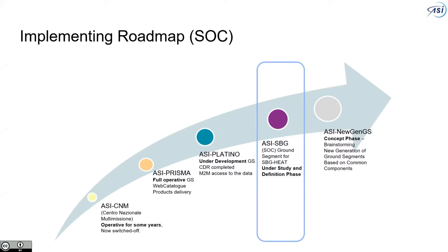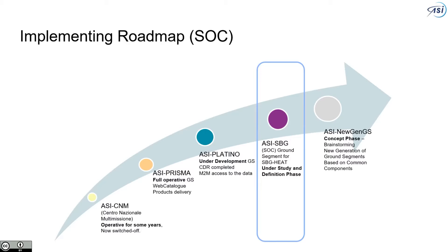Regarding the implementation roadmap, the scientific operation center is an under-development ground segment, but it comes from a history of ground segments that are time by time updated and improved. Our vision is to work to generalize the new generation ground segment, constituted of different blocks that can be combined to realize the final ground segment. Regarding the architecture of the scientific operation center, on the left we have open source technologies that we plan to use, and also some interfaces that we plan to use in order to distribute data to the user. The ground segment has a precursor already in operation — for example, for the PRISMA mission.